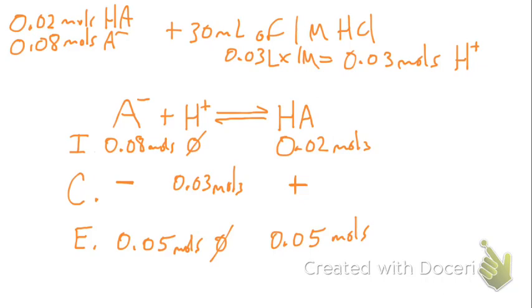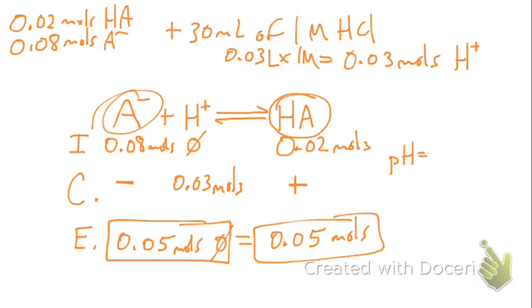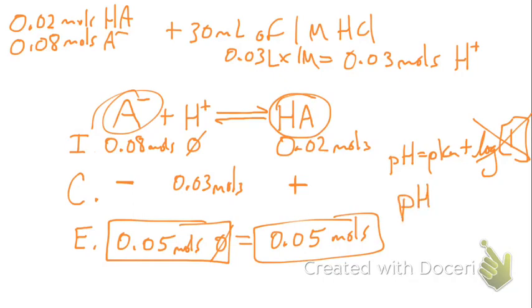The question was: what is the final pH? We can see that the moles of A⁻ equal the moles of HA — a 50/50 ratio. In the Henderson-Hasselbalch equation, log(1) = 0, so that term drops out. The resulting pH equals the pKa, which is 7.4. This is the most in-depth math we'll do in this class, but it uses the same steps repeatedly.